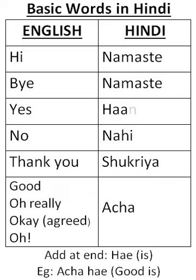Now that you know these basic words, you could try adding hai at the end, which means 'is.' For example, achha hai means 'good is,' or nahi hai means 'no is.' If someone asks 'Is David with you?' you could say nahi hai — no is.